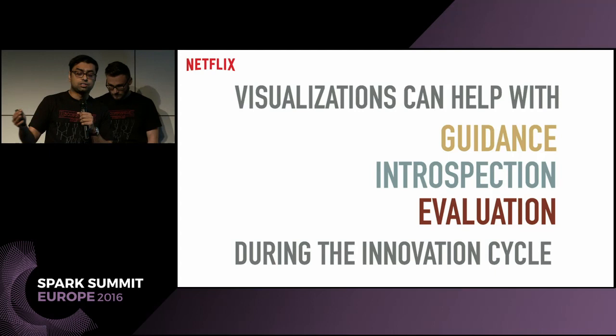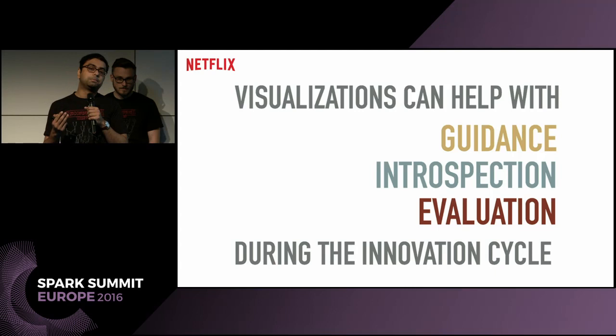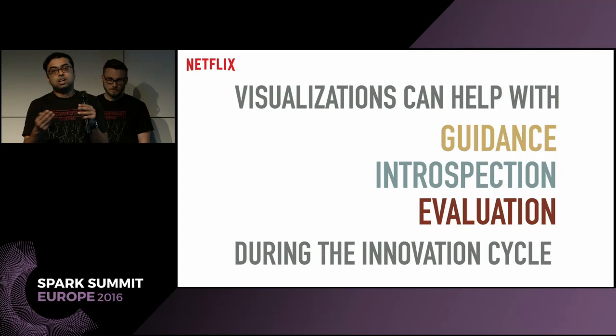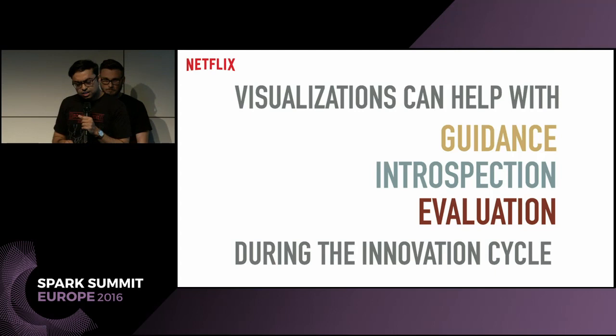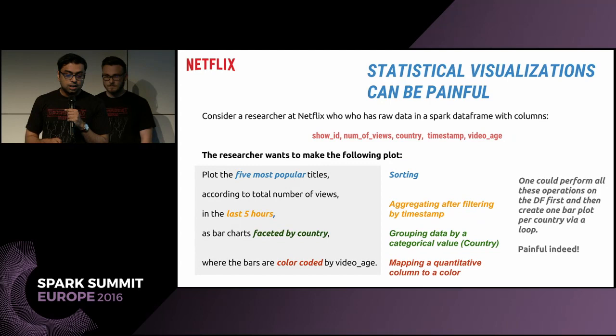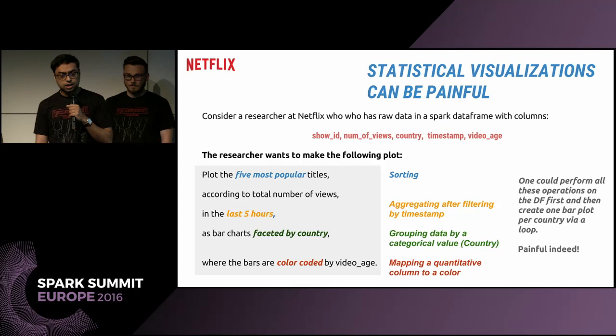Visualisation is a very important day-to-day tool that a machine learning researcher at Netflix — or basically everywhere — uses. What can be painful is when the visualisations have various aspects to them. Say I want to find the five most popular titles according to total number of views in the last five hours, as bar charts faceted by country, with the videos colour-coded by video age. It seems simple when stated in a sentence, but it actually involves sorting, timestamp filtering, faceting by country, and mapping a quantitative time value to a colour.